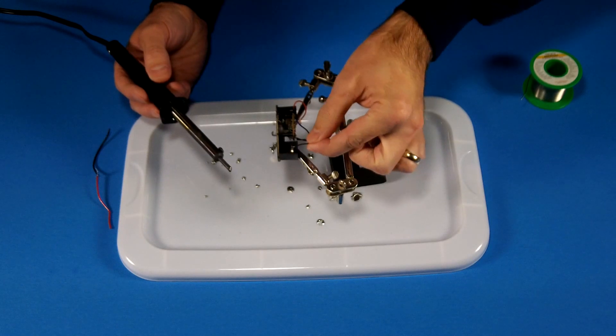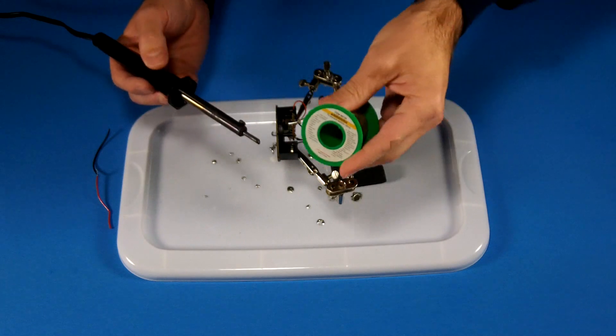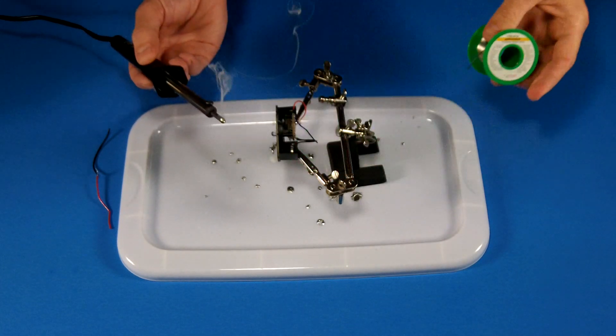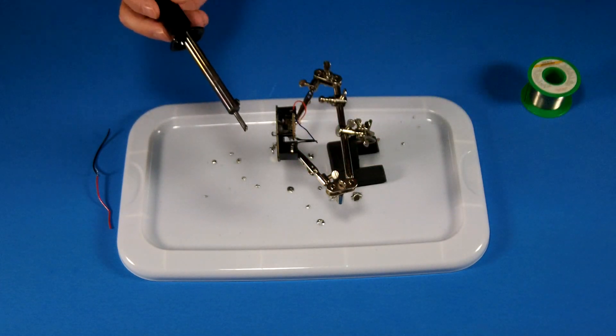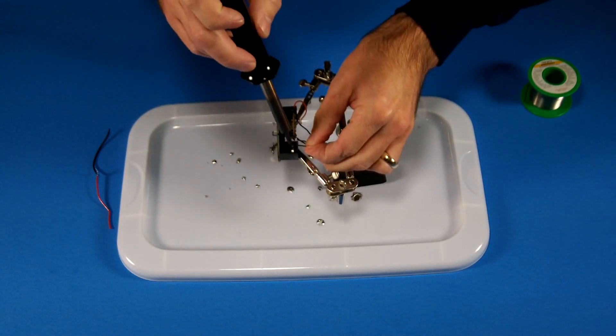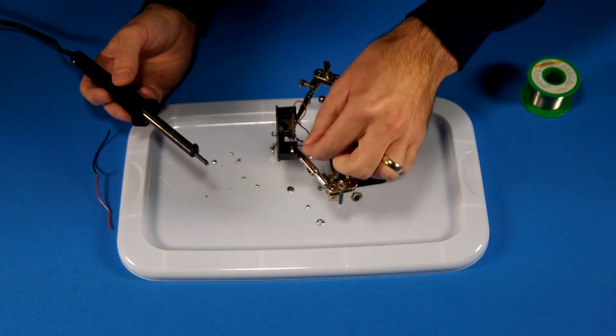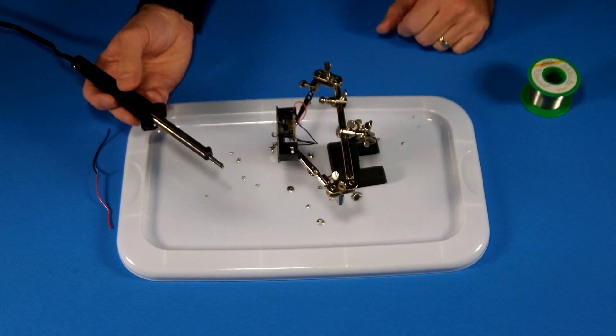To take a conductor and attach it to another piece of metal, pretty simple. Go ahead and apply some solder. Make sure your iron is nice and hot. Go ahead and hold down your conductor. Just touch your iron down. That solder will harden. That's it.